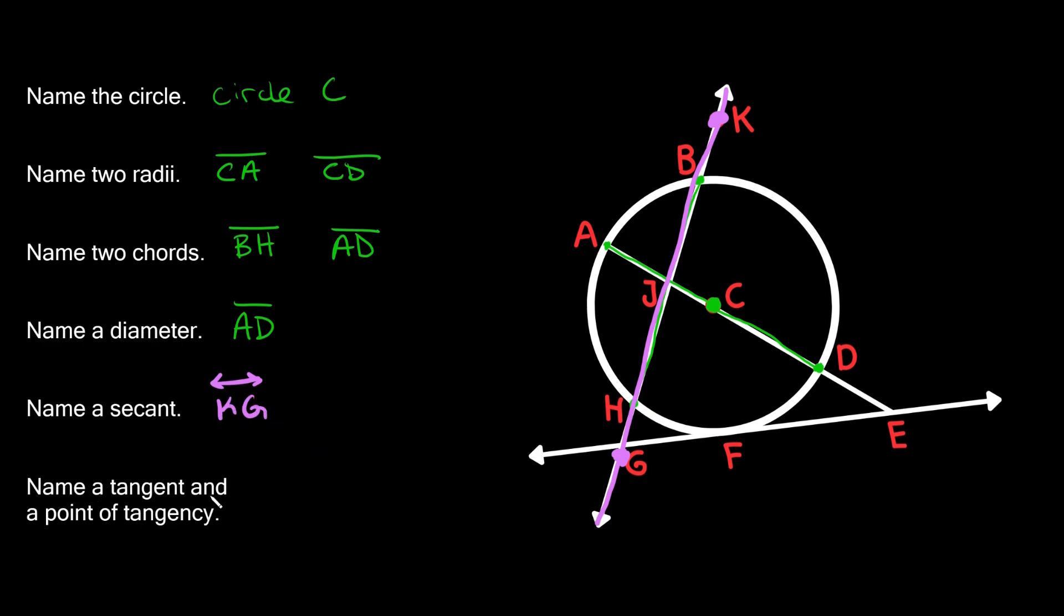And lastly, it says name a tangent and a point of tangency. So a tangent is just a line that intersects the circle at one point. So a tangent would be something like this line down here because you can see this tangent just touches the circle at this point right here. So it only intersects the circle at one point. So the tangent would be this line from G. Sorry, I drew that one a little low last time. The point should be about here.